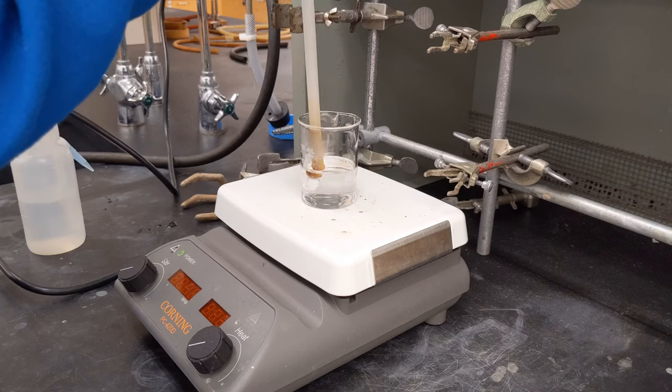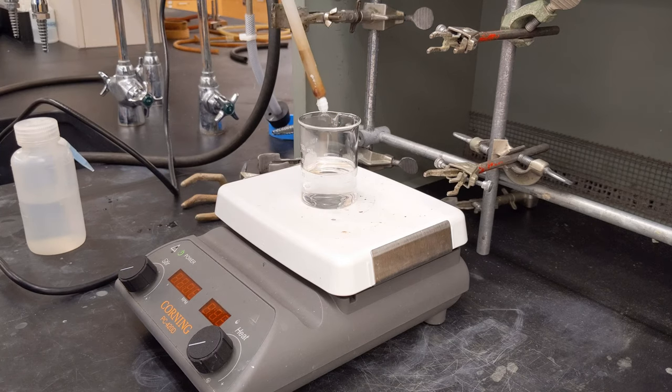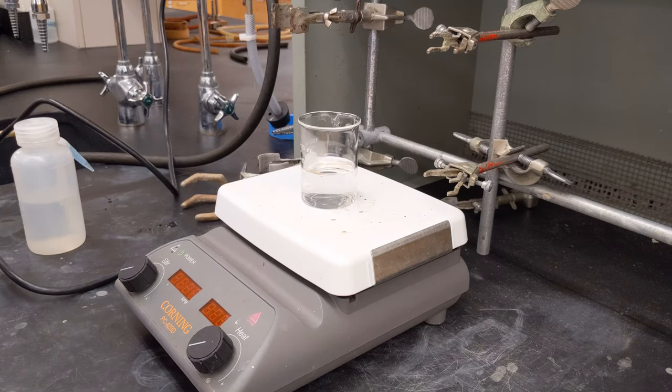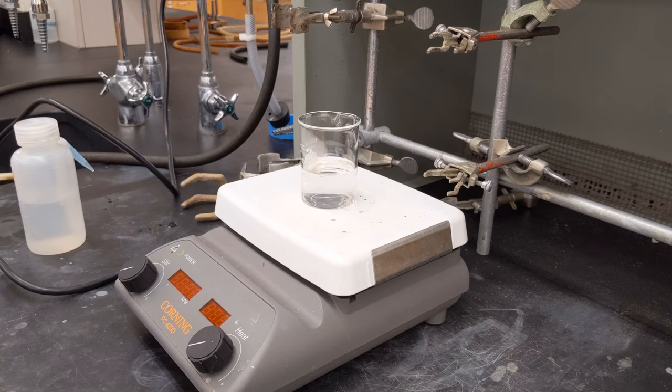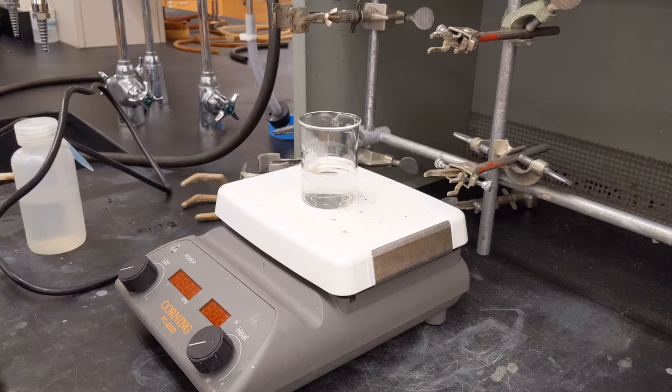So this is a magnetic stir bar retriever. Use the magnetic end to pick up the stir bar and remove it from the container. And unplug it. Remember that this is still hot, so leave it out to cool before tucking it away somewhere.